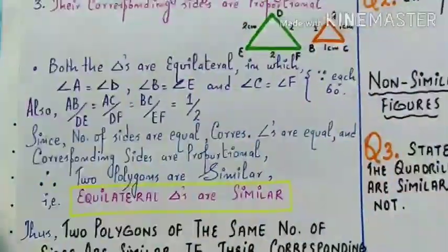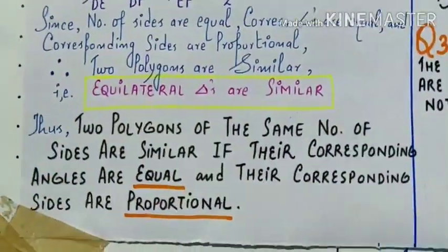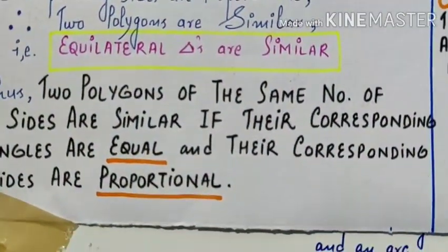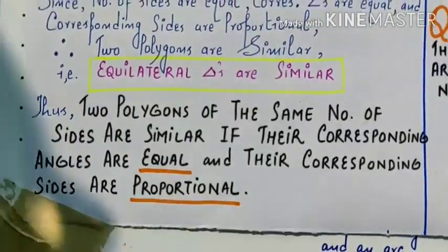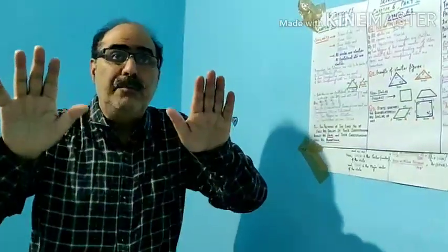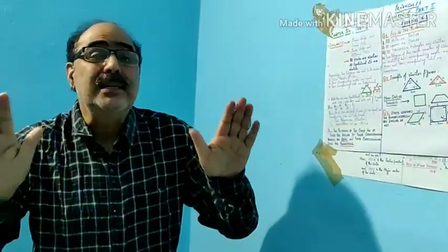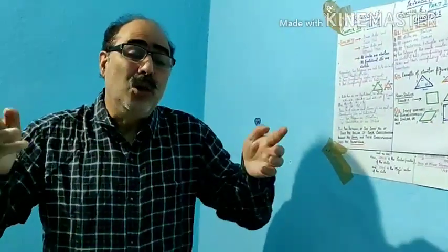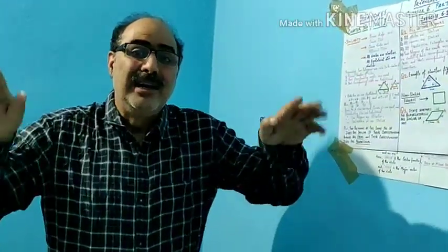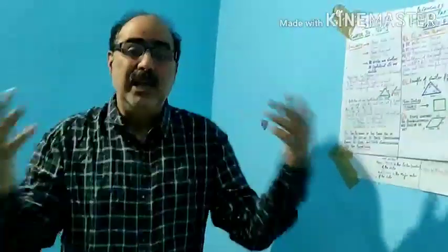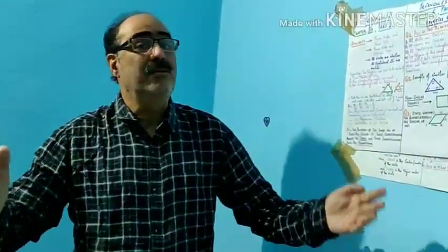तो इसका अब हम generalize करके एक result conclusion में लाएंगे। Thus, two polygons of the same number of sides are similar if their corresponding angles are equal and their corresponding sides are proportional। दो polygons आप कह सकते हैं कि वो similar हैं अगर: number of sides equal हों, corresponding angles equal हों, और corresponding sides in the same ratio — means proportional हों।